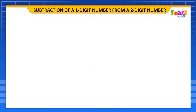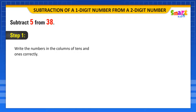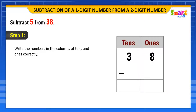Let us see an example. Subtract 5 from 38. First, write the numbers in the columns of 10s and 1s correctly.